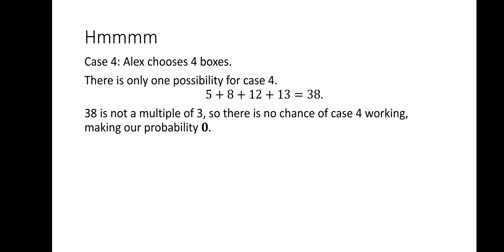Our final case is where Alex chooses all 4 boxes. This can only happen one way, where Alex chooses one box. The number of diamonds in all the boxes combined is 38, which is not a multiple of 3. So the probability that case 4 is valid is 0.